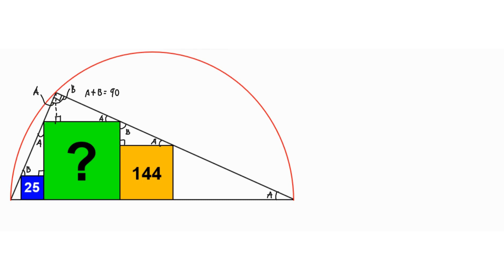Knowing that the two triangles are similar, we can use that property to solve for the length of the green square. We let the length of the green square be x. Since the area of the orange square is 144, its side length is 12, and the remaining segment along that side is x minus 12.